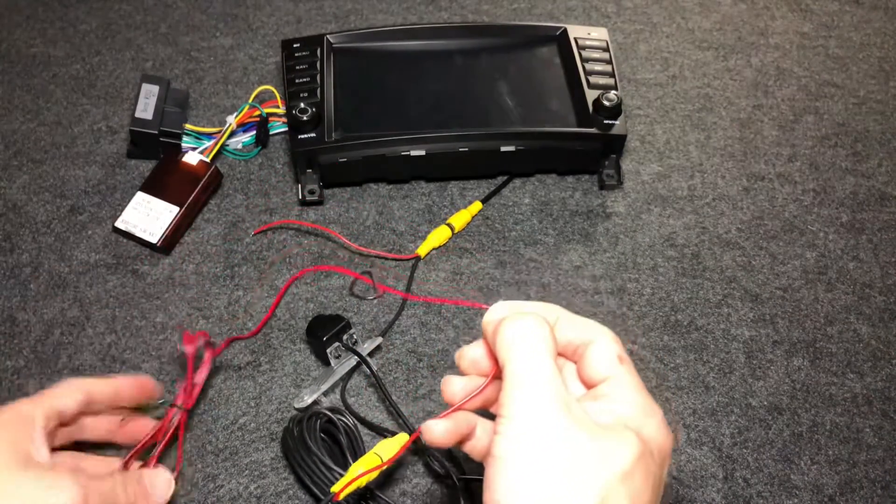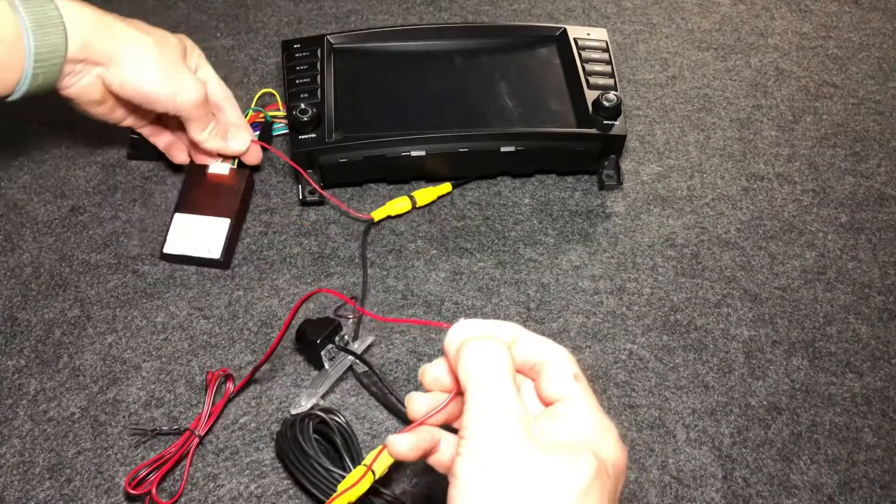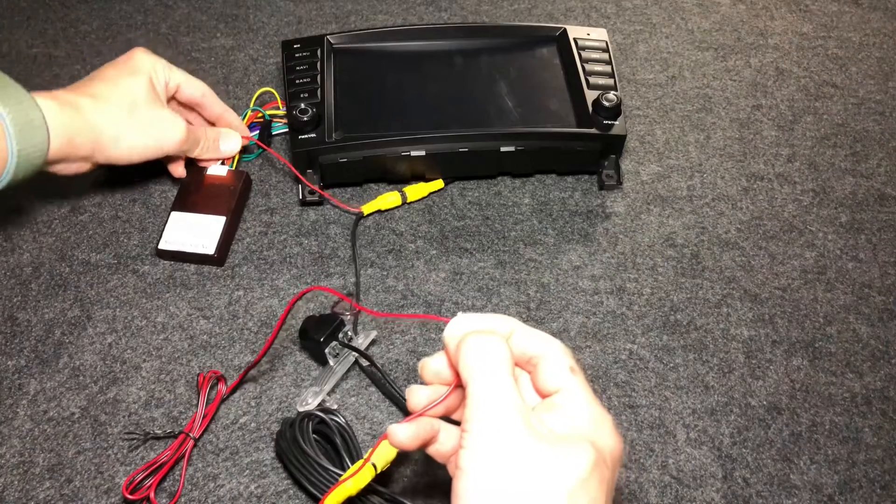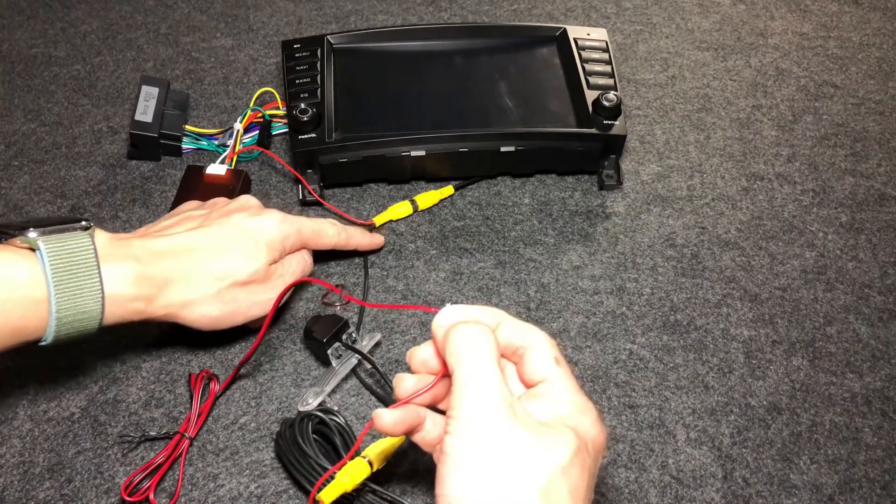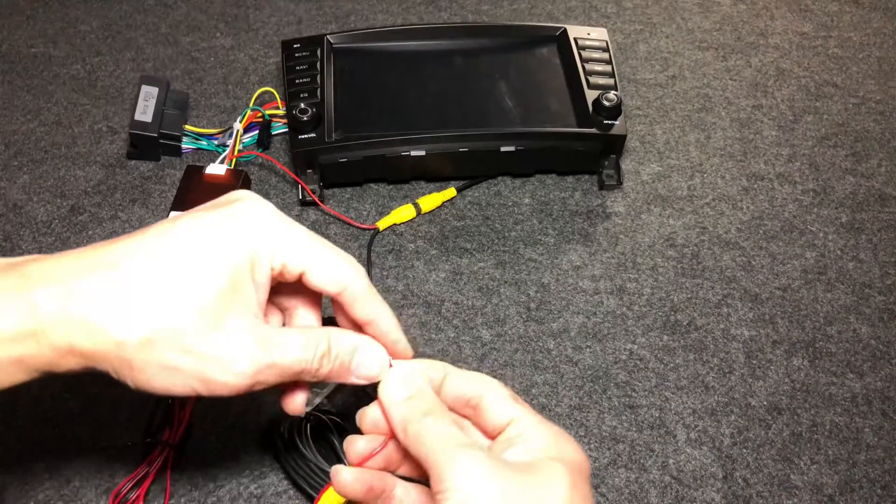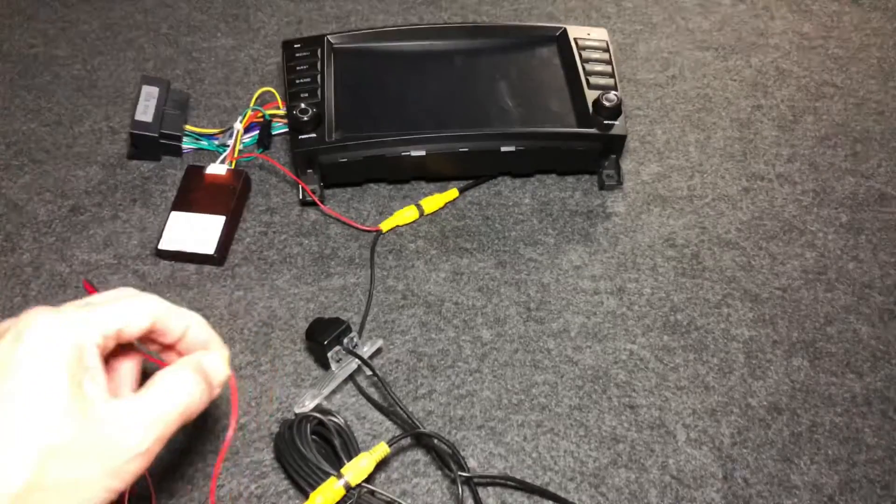So what happens is that if I put the car in reverse, 12 volts will pass through here, pass it down through this long cable, come out here, and then feed it to the camera.